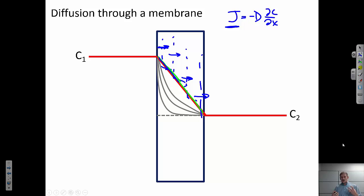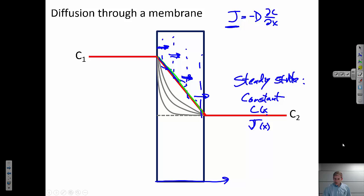So steady state is where I have a constant concentration profile. Here I'm calling that C as a function of x, right? x is just the position. And I have a constant mass flux as a function of x. The flux is the same at all of these. And it's constant in time as well, right? So to be proper, I should say these things are constant.